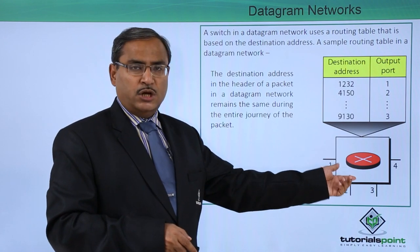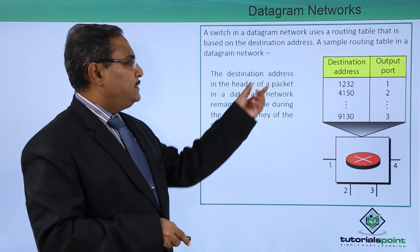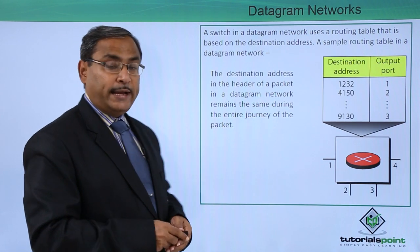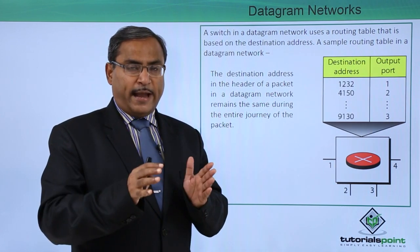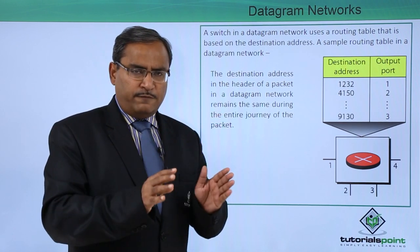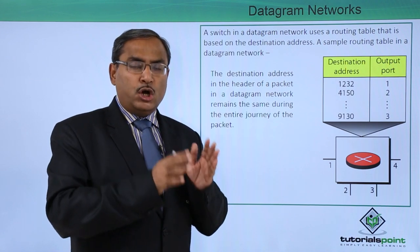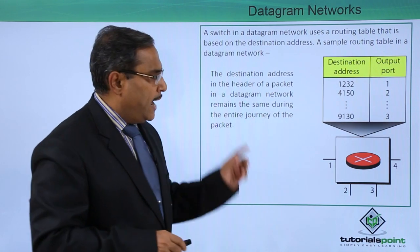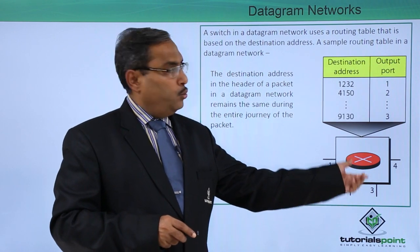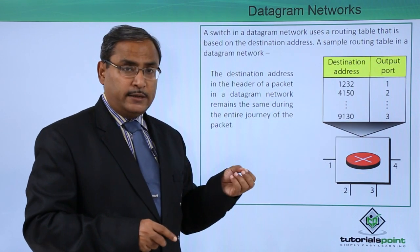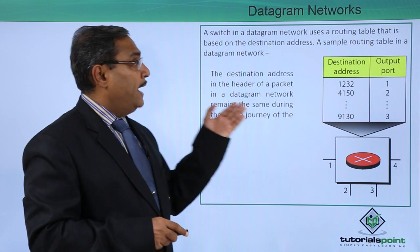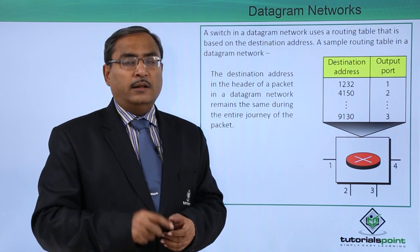The destination address in the header of a packet in a datagram network remains the same during the entire journey of the packet. Each packet has a header containing detailed information about who sent the packet and to whom it is intended. This information remains intact throughout the transmission. Each router or switch reads this packet header and, according to its routing table, transmits the packet to the appropriate destination. This is how the datagram network works.